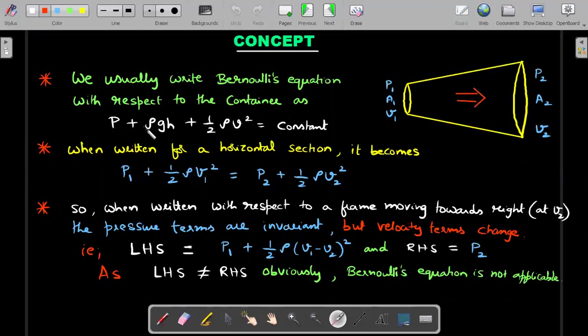We have this famous form: P + ρgh + ½ρv² at two different places on a streamline should be the same. Since our problem statement involves a horizontal tube, I can ignore this ρgh for this particular part. When written for this section at two different points, it becomes P1 + ½ρv1² = P2 + ½ρv2².